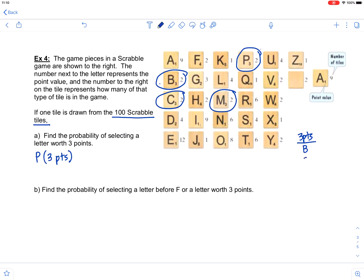So B, C, M, and P. But we also need to know how many of each of those letters there are. Notice each of those letters has a two next to it. That means there are two B tiles, two C tiles, two M tiles, and two P tiles. So even though there's four letters worth three points, there are two of each tile for a total of eight. So when you're looking at all of the tiles, there are eight total tiles that are worth three points.